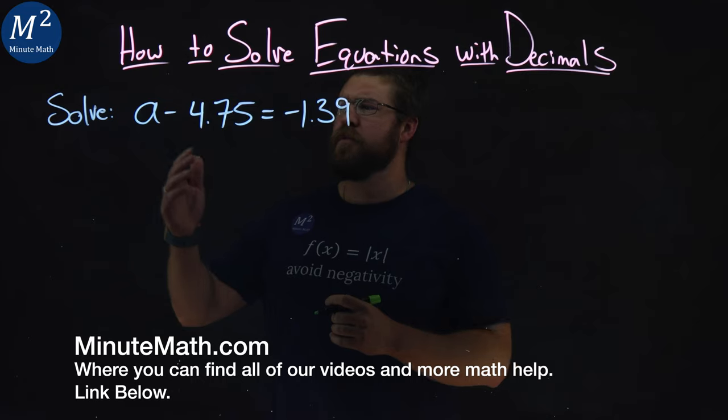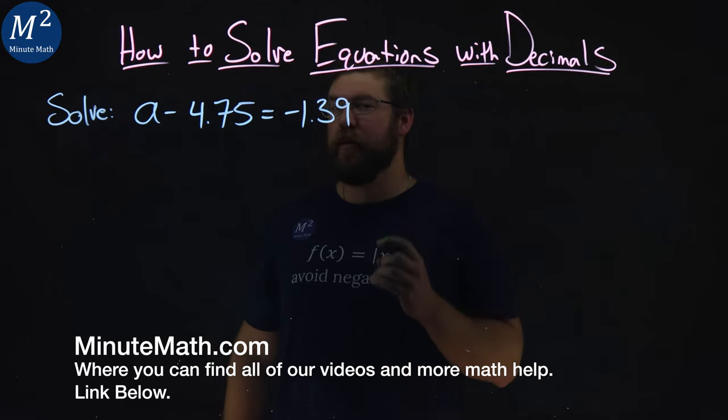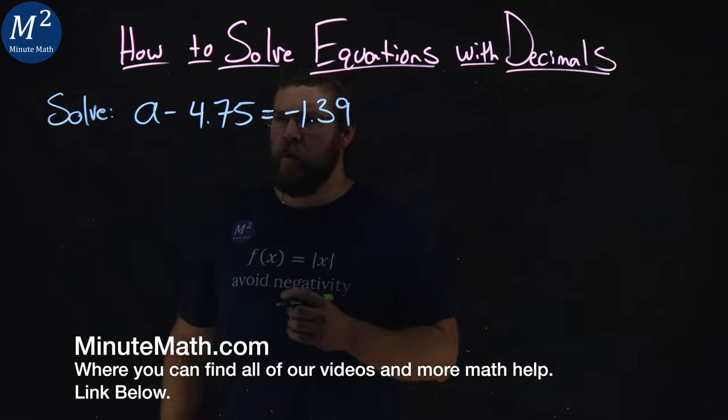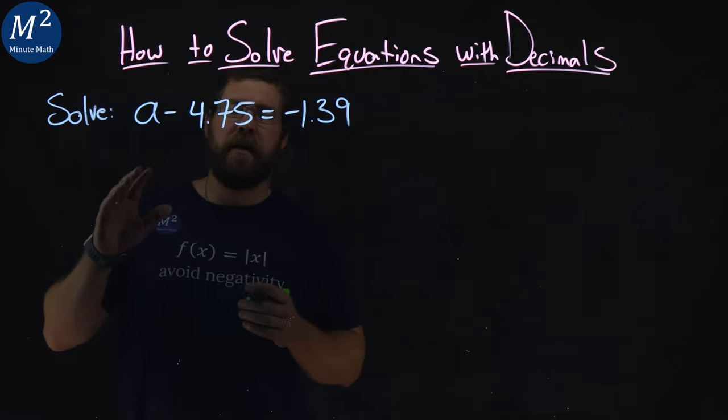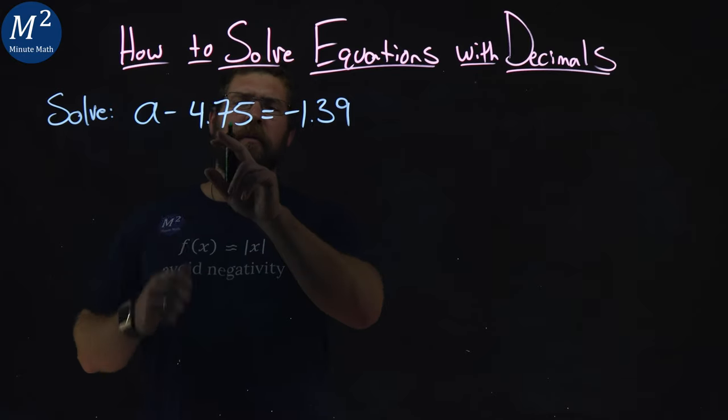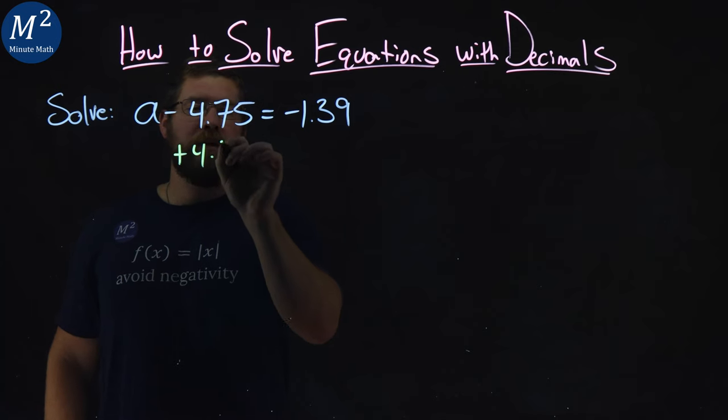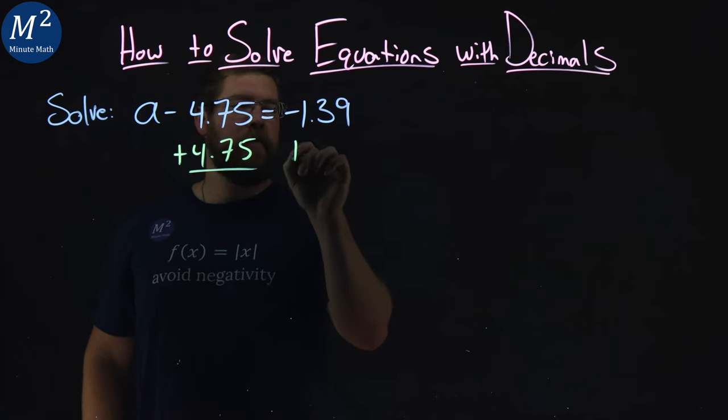We're given this problem right here, solve A minus 4.75 equals negative 1.39. Well, the addition property of equality states that if I take a number on one side, if I add that number to the other side, I'm allowed to do that. So, if you want to eliminate the negative 4.75, I'm going to add 4.75 to both sides.